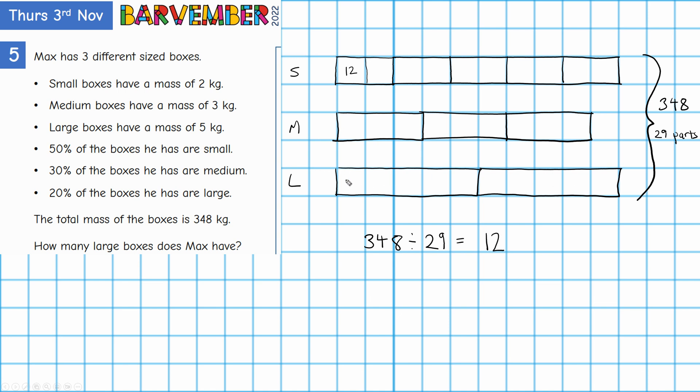Okay. I must multiply that by 12. So two times 12 gives me 24. So there must be 24 large boxes.